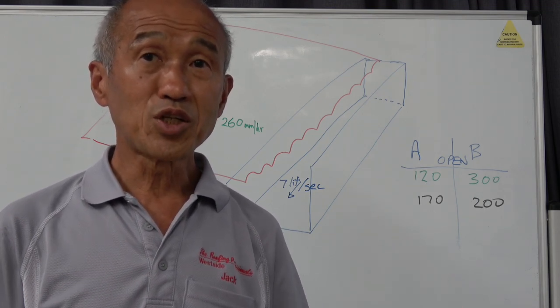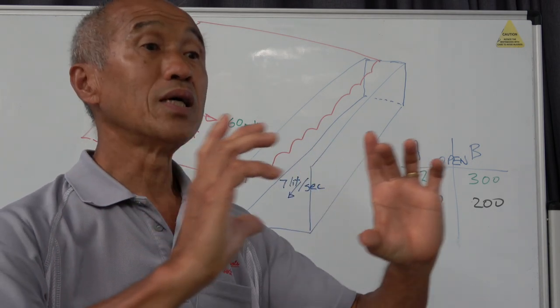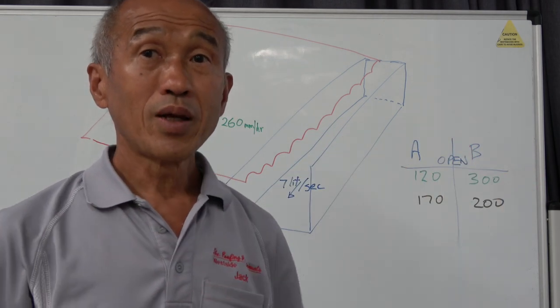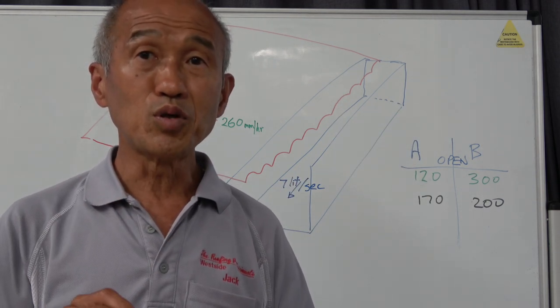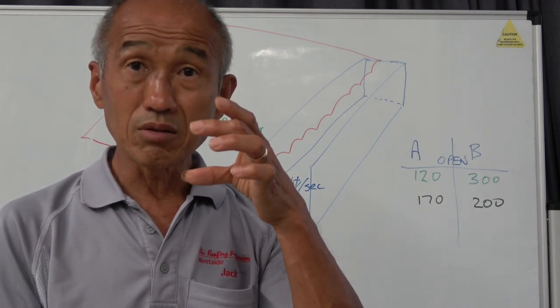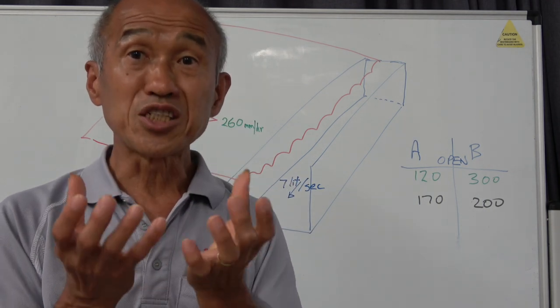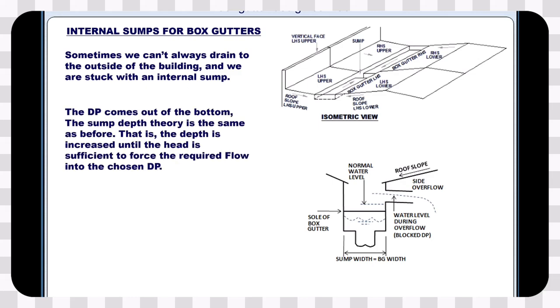Now there are some situations where you can't actually extend the gutter full width outside the walls. In that case it's boxed in and you have to do with an internal or several internal downpipes and a sump. And our friends at roofgutterdesign.com.au have got all these things covered.